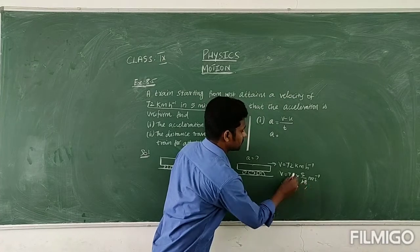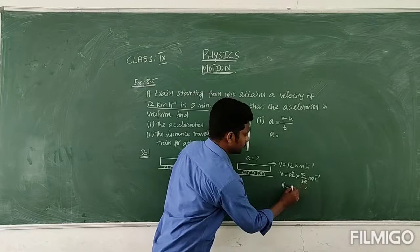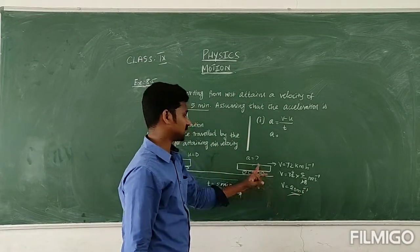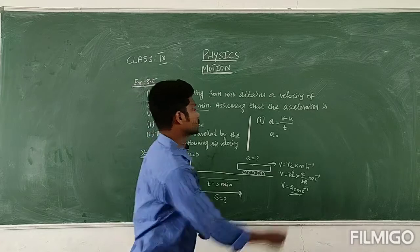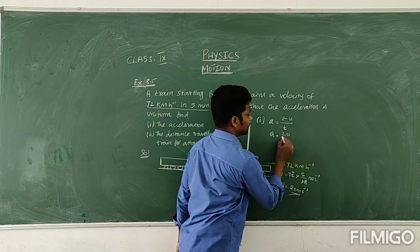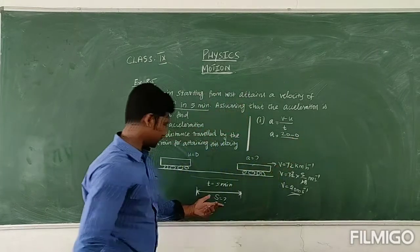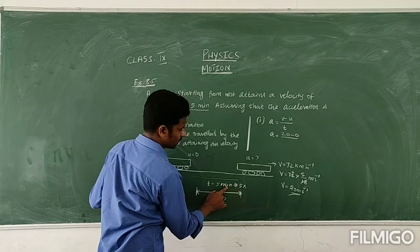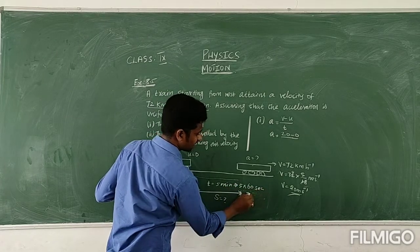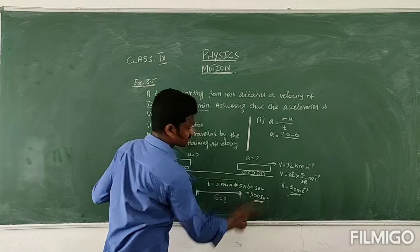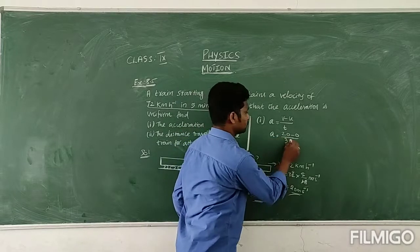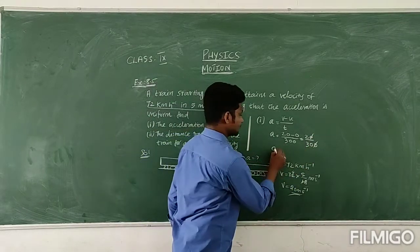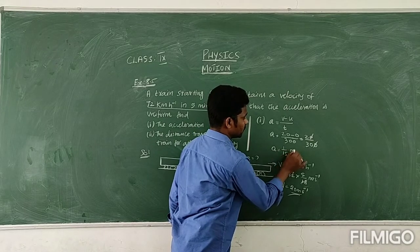So V is equal to 72 multiplied by 5/18. Simplifying: 72 divided by 18 is 4, and 4 multiplied by 5 is 20. So V equals 20 metres per second. The initial velocity u is 0. Now divide by the time value — time is given in minutes, so convert to seconds: 5 minutes equals 5 into 60, which is 300 seconds. So acceleration equals 20 minus 0 divided by 300, giving 20/300. Cancelling zeros: 2/30, which equals 1/15 metres per second squared.